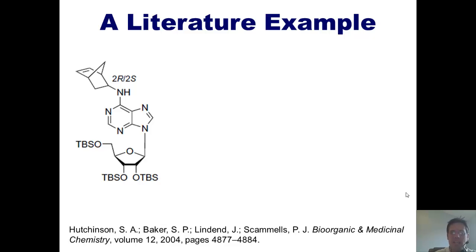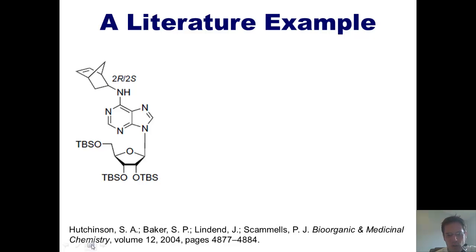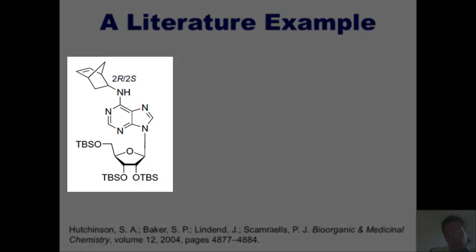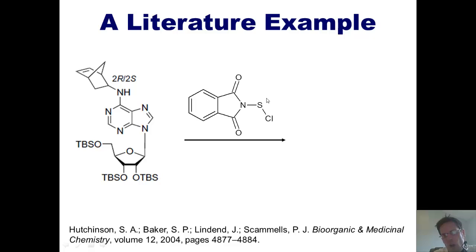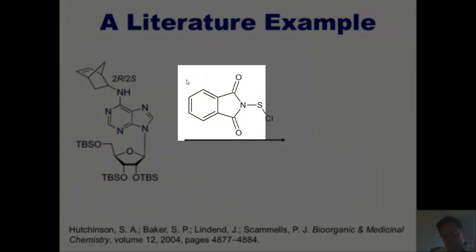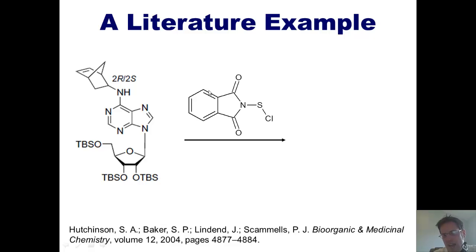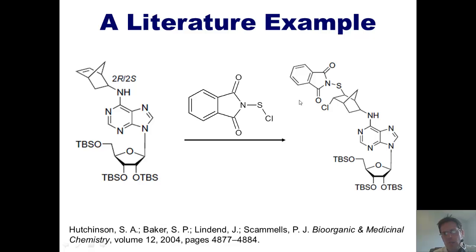I want to show you one example from the literature. This is a complex molecule — don't pay attention to the complexity, just note there's a carbon-carbon double bond. These researchers published a reaction in which they took this molecule and treated it with a reagent where everything from the sulfur to the left acts just like an H — making it essentially HCl, or HX where X is Cl. The alkene attacks the sulfur, kicks off a chloride, and the chloride plugs into the hole where the carbocation is, forming the product.